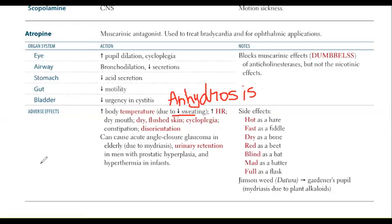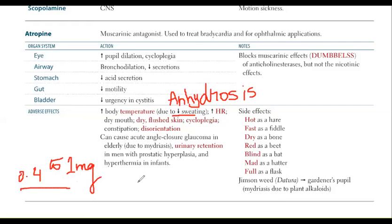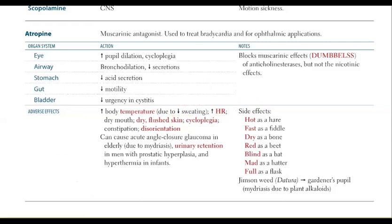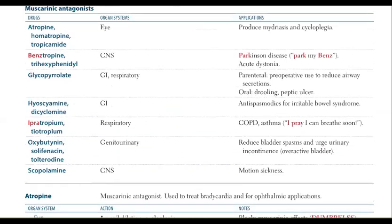The normal dose of atropine is 0.4 to 1 mg. Because it has a very bad side effect profile, you should know this dosage. Never give this drug to a patient who is a heart patient or who has arrhythmias — it will cause increased heart rate. You can learn the contraindications from the adverse effect profile.